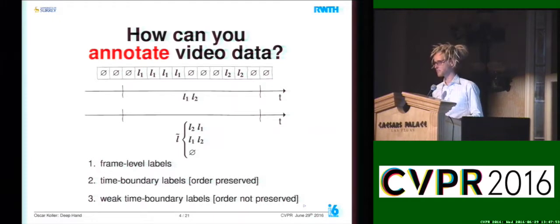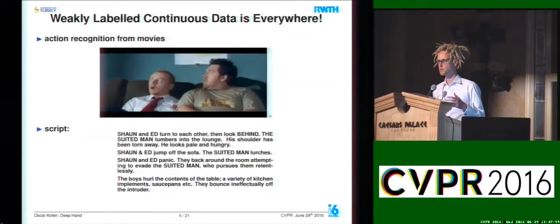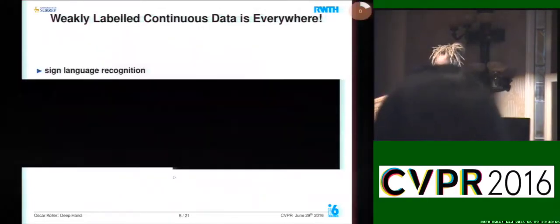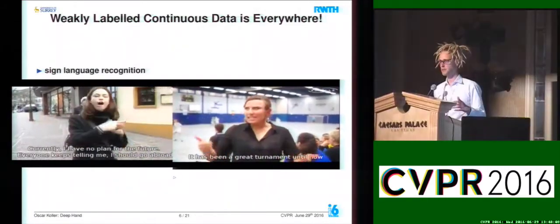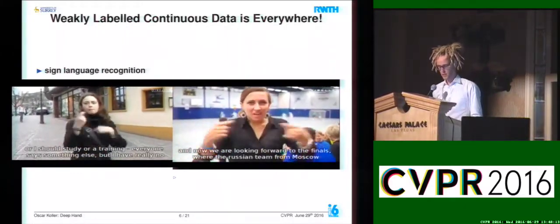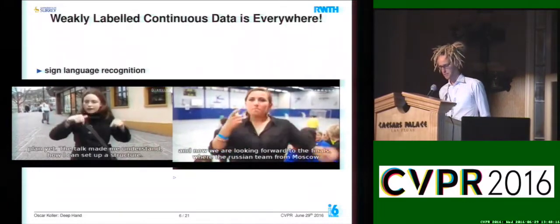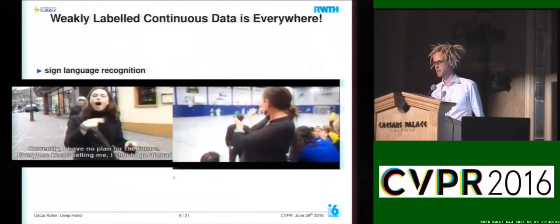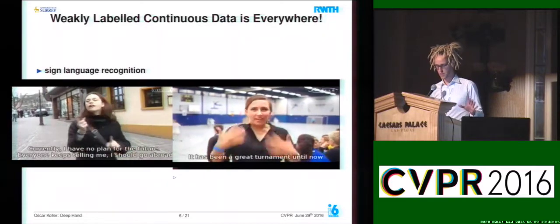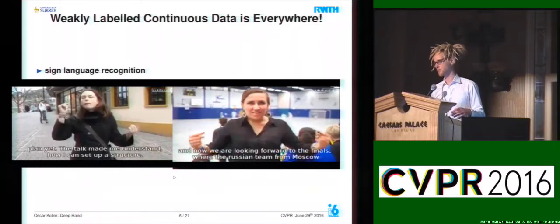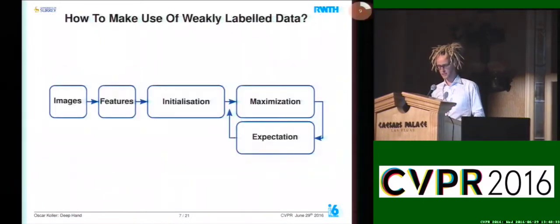The weak time boundary labels are what we want to train our classifier with, because this data is virtually everywhere around us. In action recognition, you can use movie databases with scripts as a source of weak supervision. Or in sign language recognition, there are millions of clips that come with translations for free. We looked at the speech recognition community, which has been dealing with continuous data for several decades, and we propose a framework that makes use of their ideas and embeds strong vision models into it.